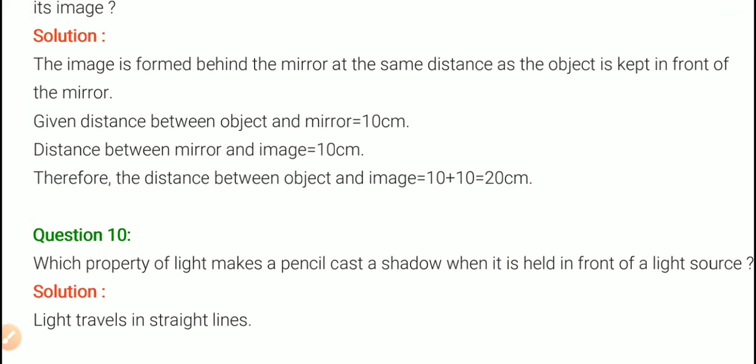Which property of light makes a pencil cast a shadow when it is held in front of a light source? This is the property that light travels in a straight line. Because light travels in a straight line, the pencil blocks the light and casts a shadow.